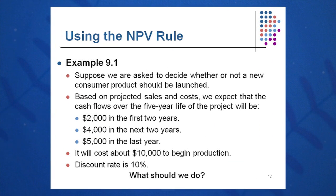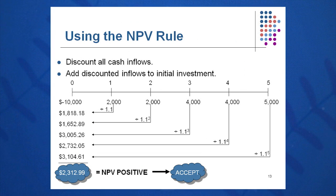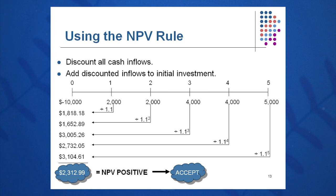Here's another example. Suppose we're going to look at whether a consumer product should be launched. You get $2,000 in the first few years, $4,000 in the next two, and $5,000 in the last year. It will cost $10,000 today to begin production. We discount our cash flows at 10%. We draw a timeline, show the cash flows coming in, and discount them back — dividing by 1.1, then 1.1 squared, 1.1 cubed, and so on — and compare those inflows to the negative $10,000 of cash outflow today. We see a positive NPV of $2,300, so we accept this project.